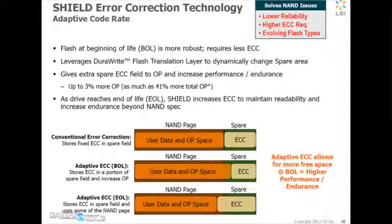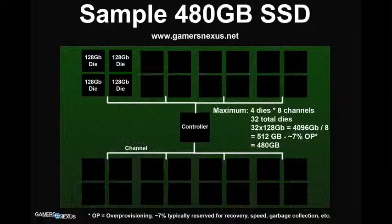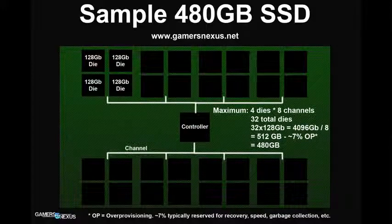Speed is also an issue. TLC is going to be a bit slower than MLC. The pro of TLC is it's cheaper to make because you get more bits in the same silicon, but the drawback is it gets a little slower. So the controller has to do other things to mitigate that — you look at potentially having more die. The 240 or 256 GB capacity is a pretty common sweet spot, and for the most part that's accessing as many die as possible to keep things going as quickly as possible.